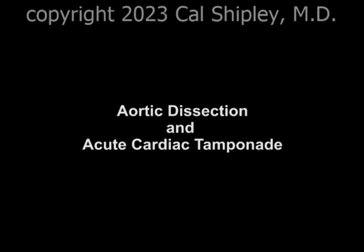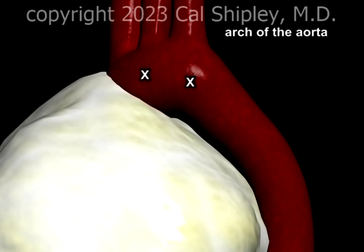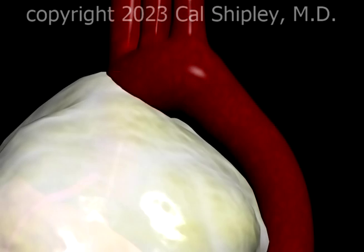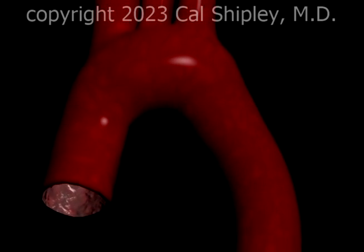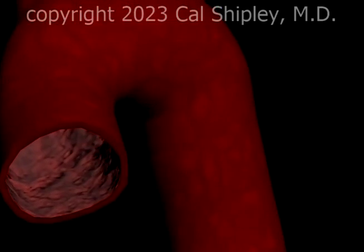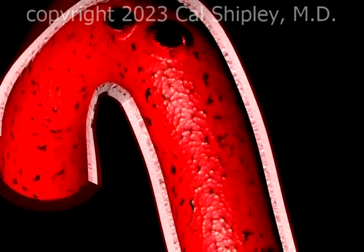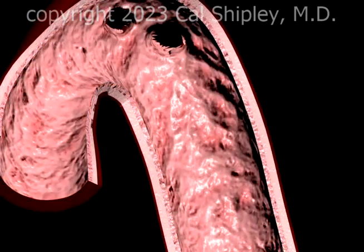Now let's take a look at the process of aortic dissection resulting in acute cardiac tamponade. Aortic dissection typically occurs in older adults in the presence of disease of the aortic wall, also known as atherosclerosis or hardening of the arteries. Subjected to the constant stress of the high blood pressure within the aorta, the diseased inner wall — the intima — will develop a tear.